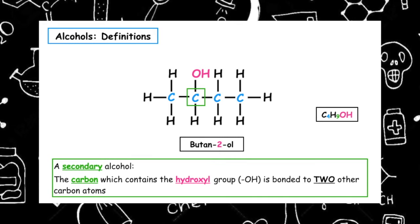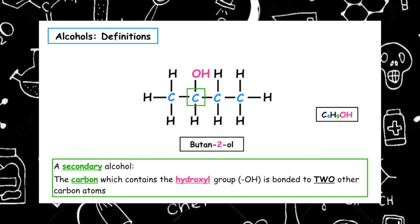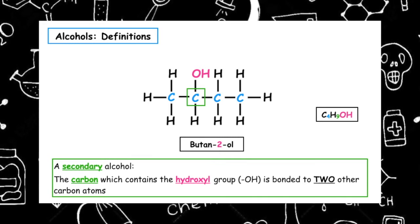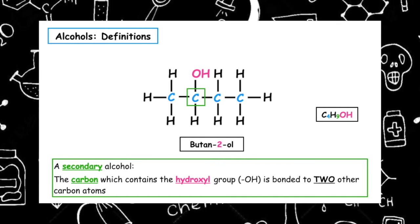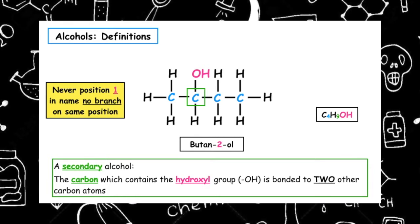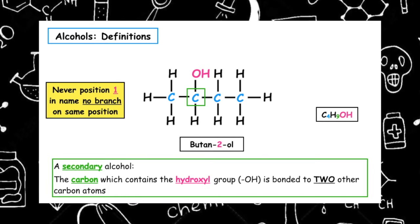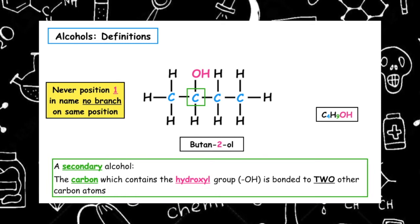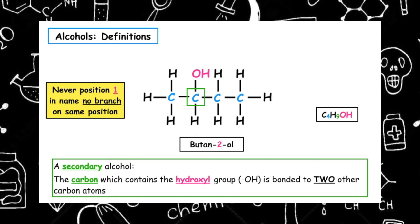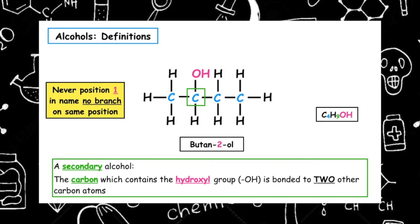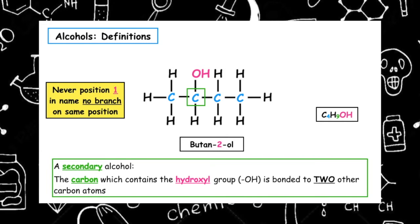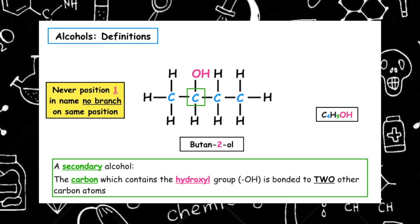To identify the classification from the name, you need to know that you will never have position one for the hydroxyl group in the name, and there will be no branch on the same position.